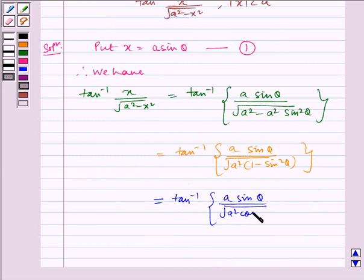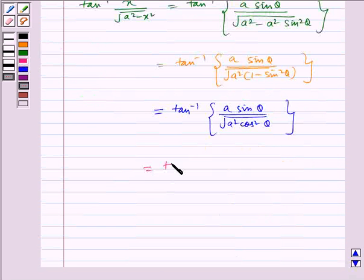This is equal to tan inverse of a sine theta by under root a squared cos squared theta, which is equal to tan inverse of a sine theta by a cos theta.